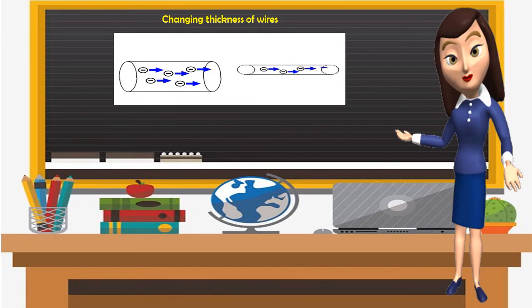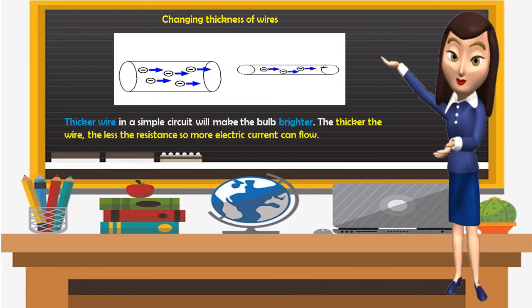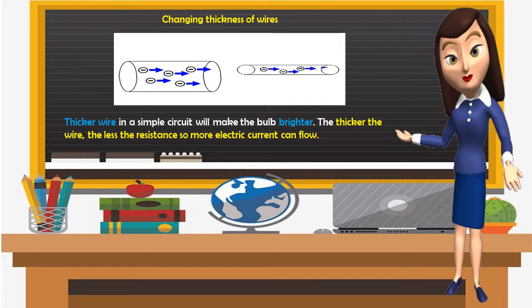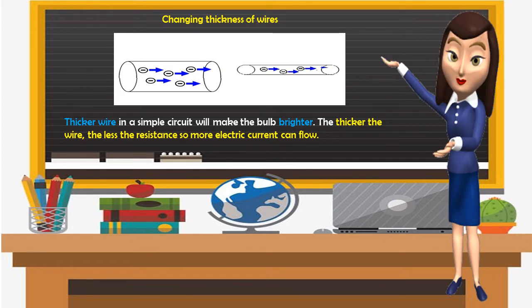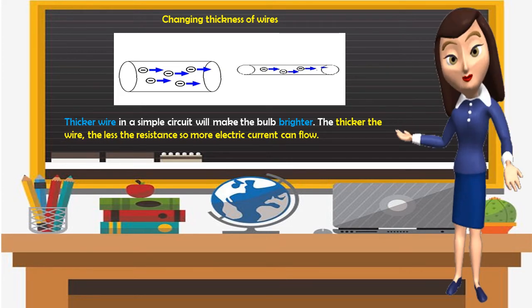Changing the thickness of wire: thicker wire in a simple circuit will make the bulb brighter. The thicker the wire, the less the resistance, so more electric current can flow.